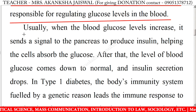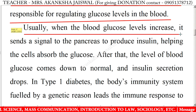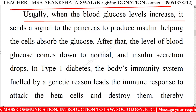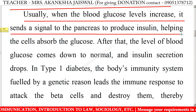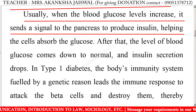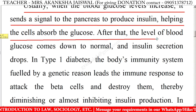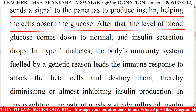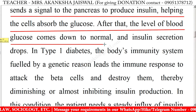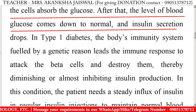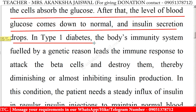Usually, when the blood glucose levels increase, it sends a signal to the pancreas to produce insulin, helping the cells absorb the glucose. After that, the level of blood glucose comes down to normal and insulin secretion drops.